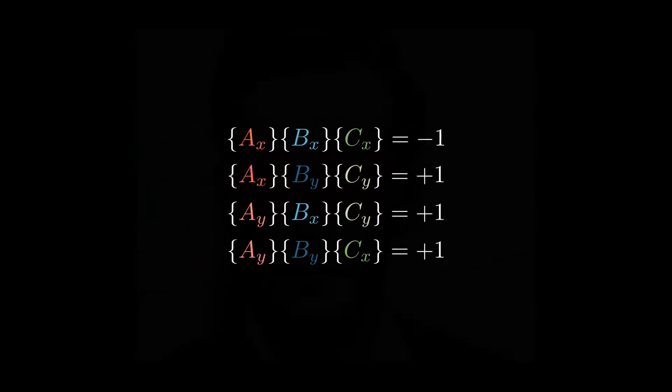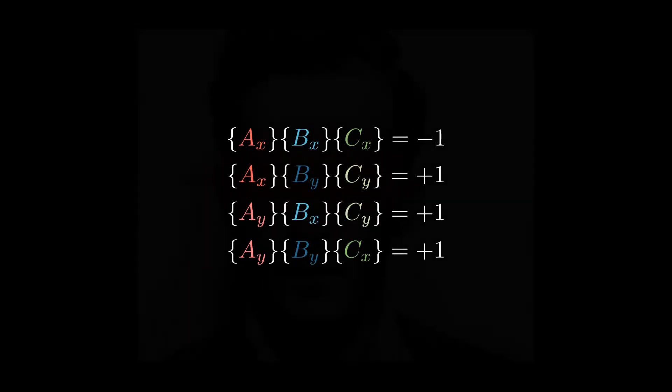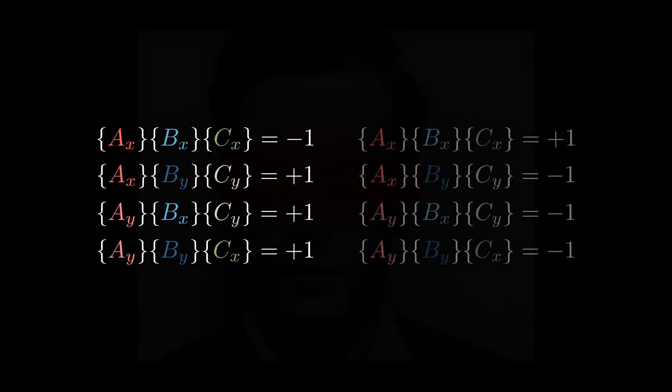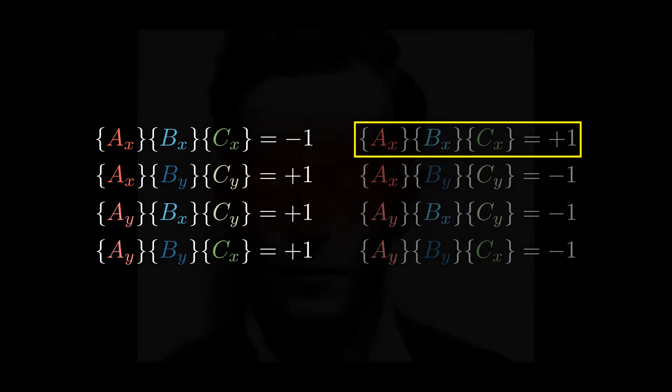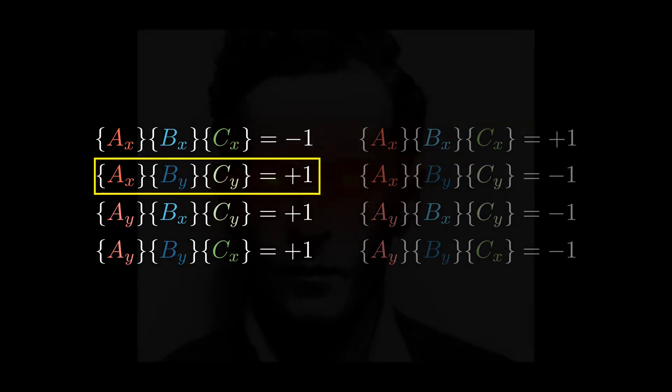This option is called superdeterminism and it's the claim that no, yeah, there are GHZ states that when measured in the XXX direction would totally give a value of plus one. But by some unknown cosmic principle for some reason whenever we could get a value of plus one by measuring XXX then we end up measuring XYY instead and we just end up missing all of those.